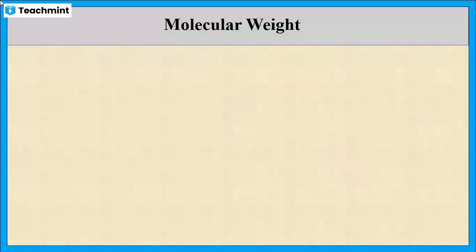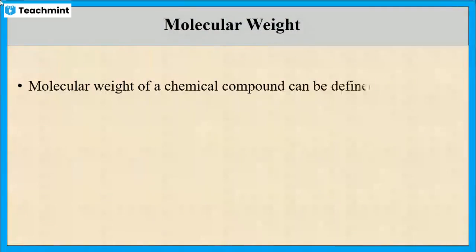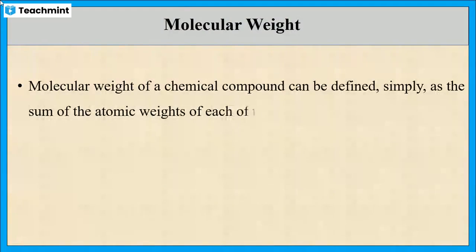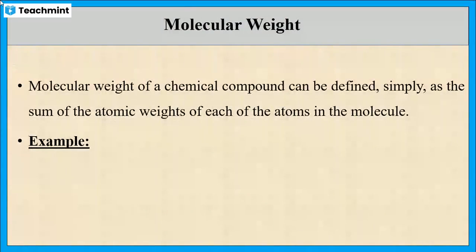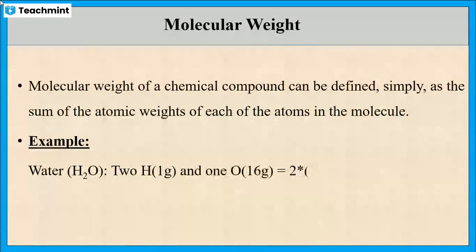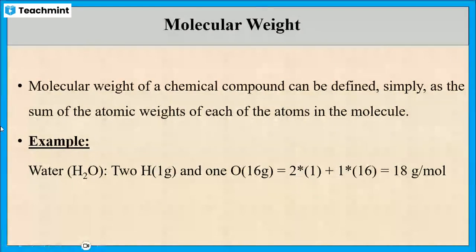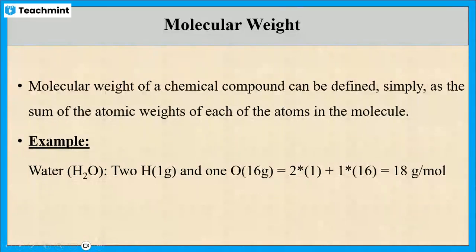We can define the molecular weight of any chemical compound as the sum of the atomic weights of each of the atoms in the molecule. For example, the molecular weight of water is calculated by adding the atomic weight of 2 hydrogen, that is 2 into 1, and the atomic weight of oxygen, that is 1 into 16, so the total is 18.